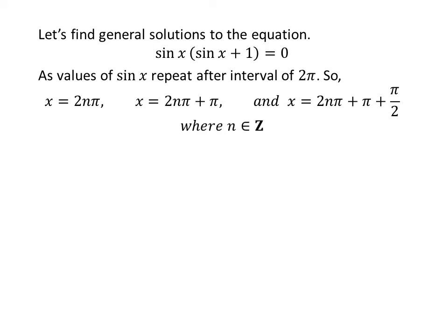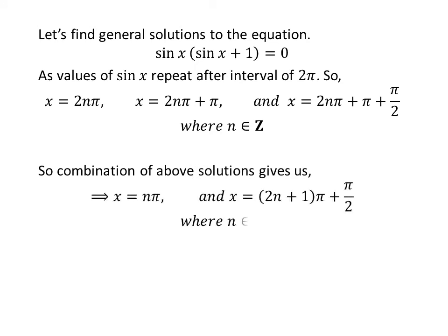Let us find the general solutions. As we know, the values of sine of x repeat after the interval of 2 times pi. So the general solutions are 2 times n times pi, 2 times n times pi plus pi, and 2 times n times pi plus 3 pi upon 2, where n is an integer. Combining these gives the general solution: n times pi and 2 times n plus 1 times pi plus pi upon 2, where n is an integer.